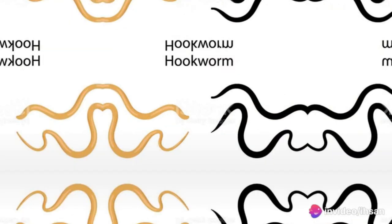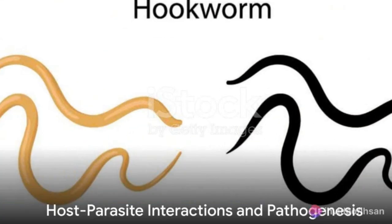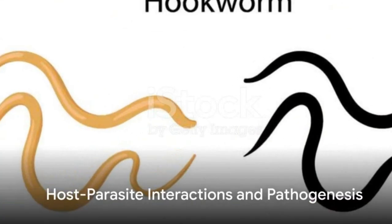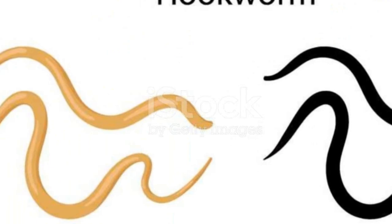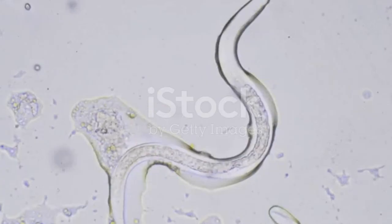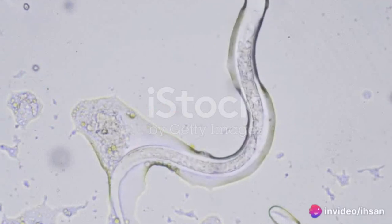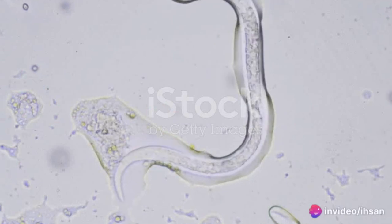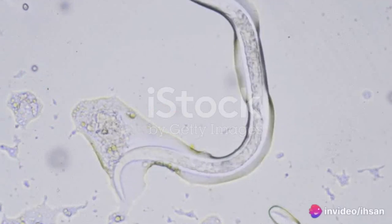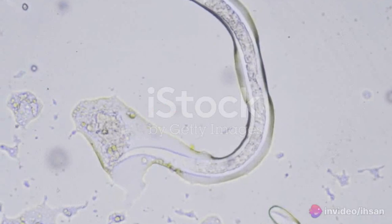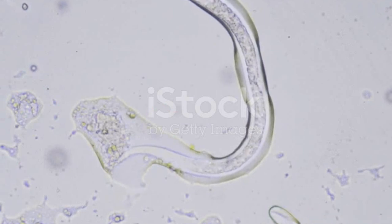The relationship between a parasite and its host is a delicate balance of survival strategies. Parasites can have different types of hosts: definitive hosts, where they reach maturity and reproduce; intermediate hosts, where they undergo various development stages; and reservoir hosts, which serve as a backup when definitive and intermediate hosts are unavailable.